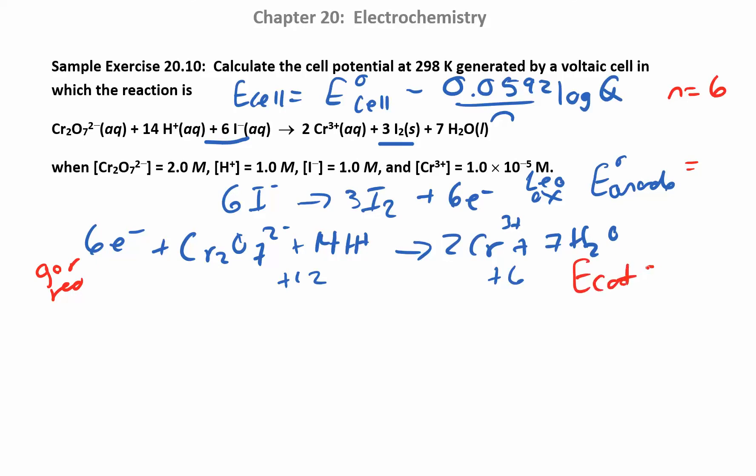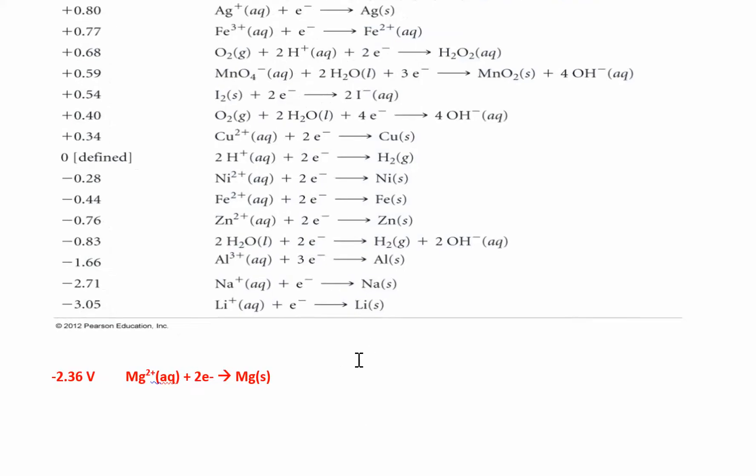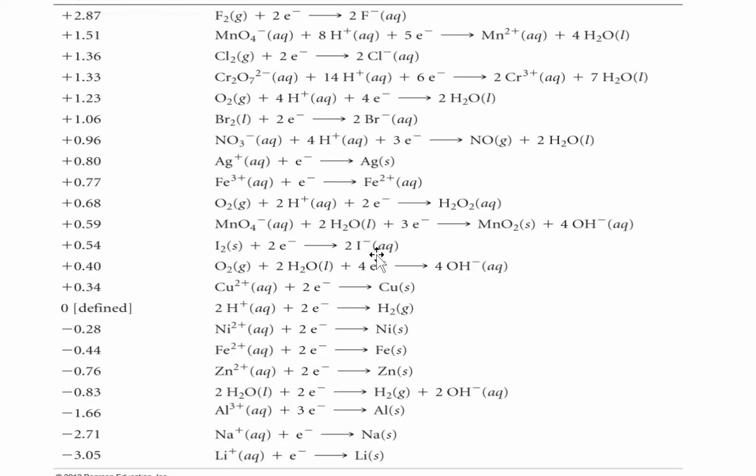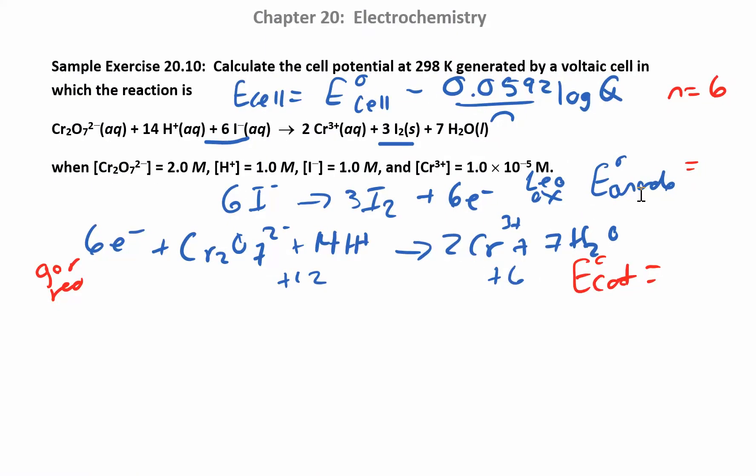So I have my E° cathode and I can look those up in the table now. I'm looking at I⁻ and I₂. Let's go to our table. There's I₂ and I⁻. Notice I had like a 3 and a 6 over there before. It doesn't matter. I don't have to change this number. Just pull it out. I'm looking for the I₂ and the I⁻, I don't care about the coefficients. So 0.54 for that guy. And then our other reaction was up here. This 1.33. Our anode is 0.54 for the iodine and the other one was 1.33.